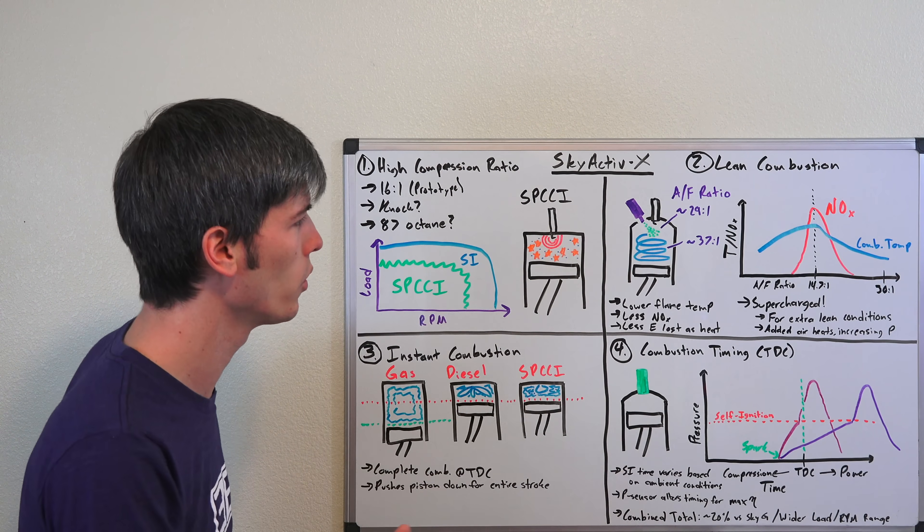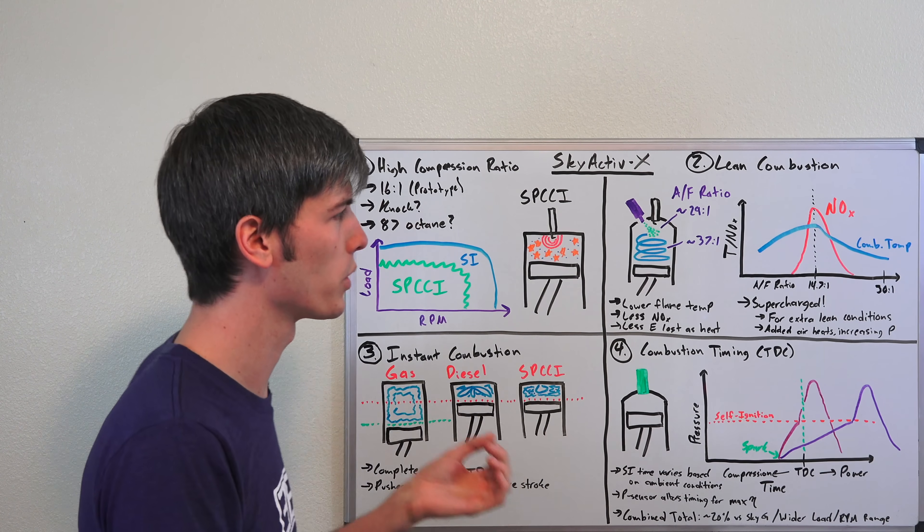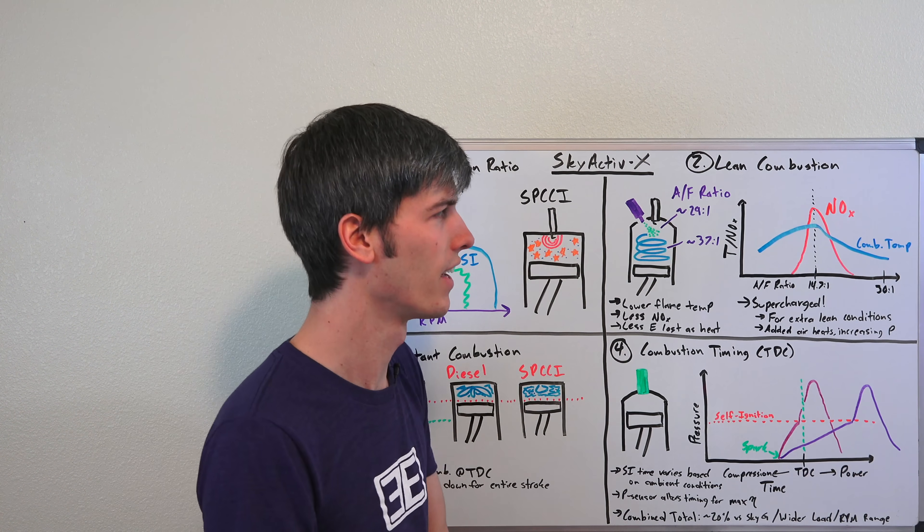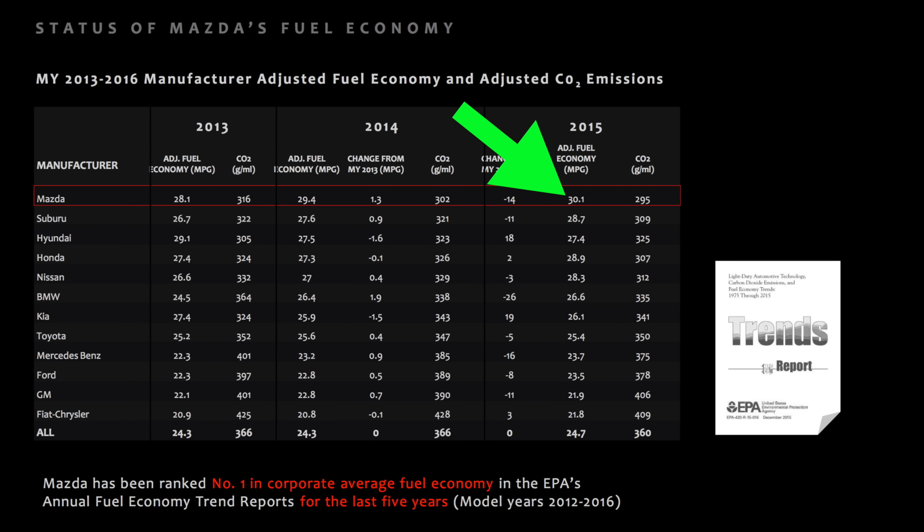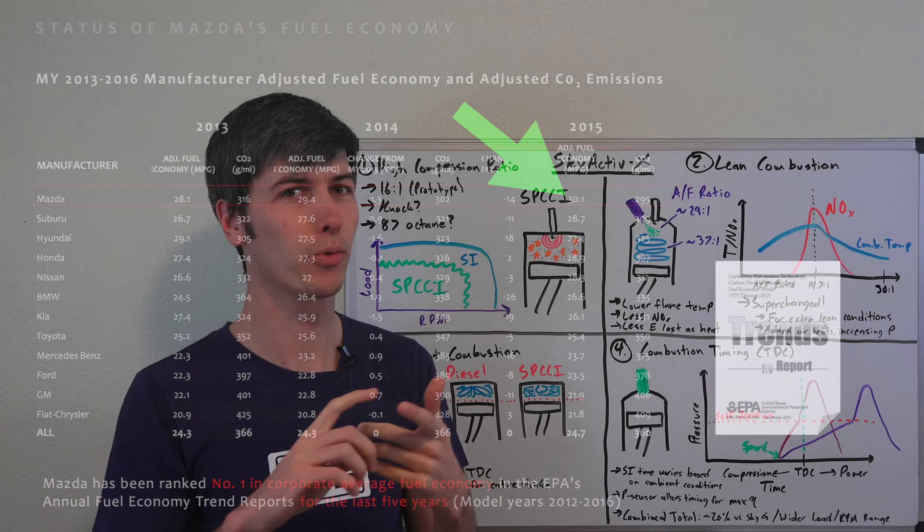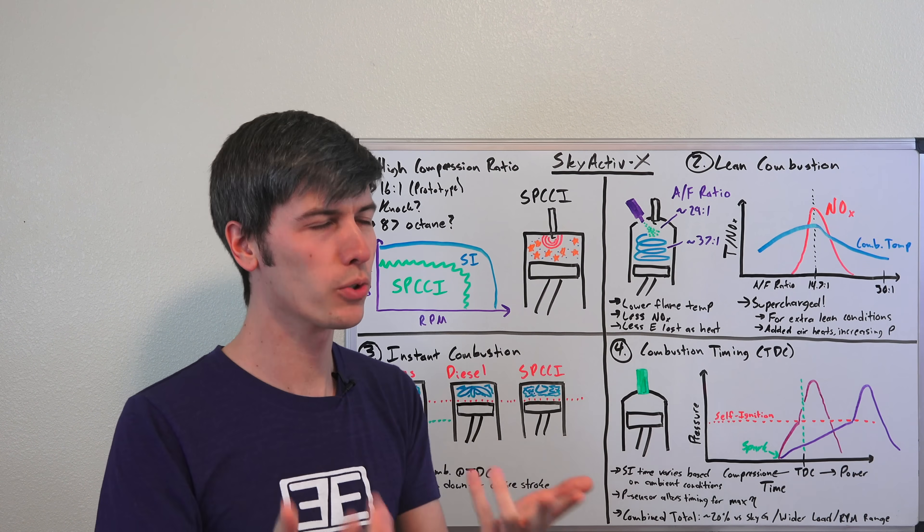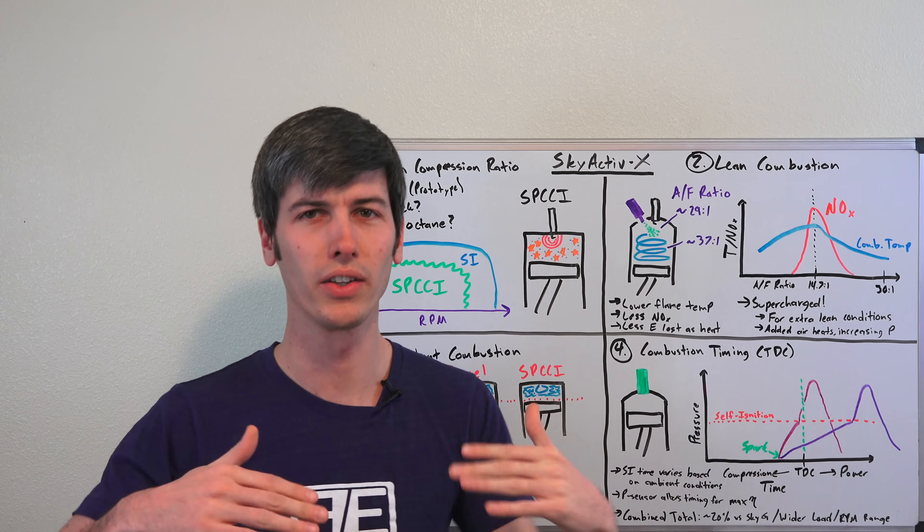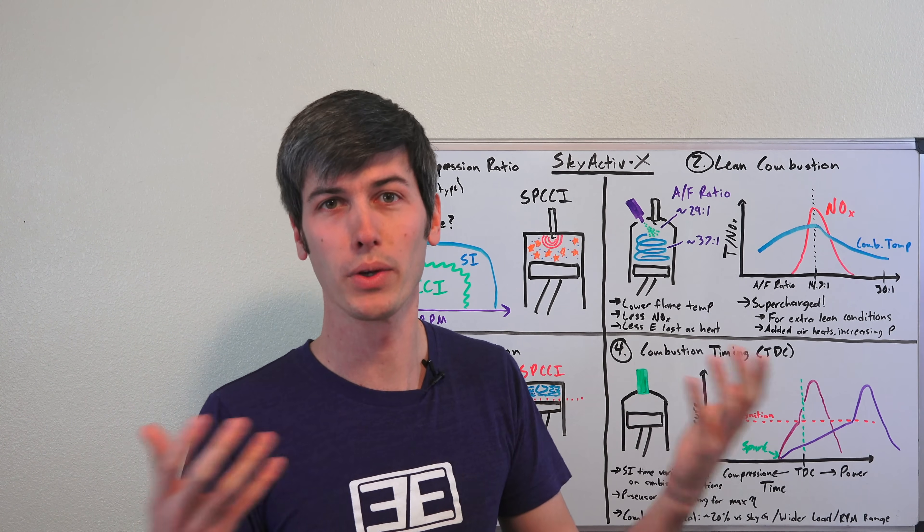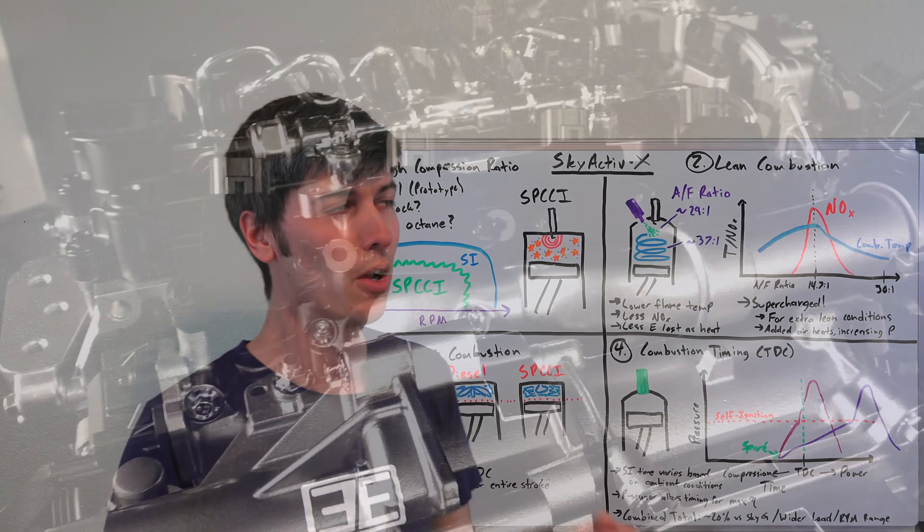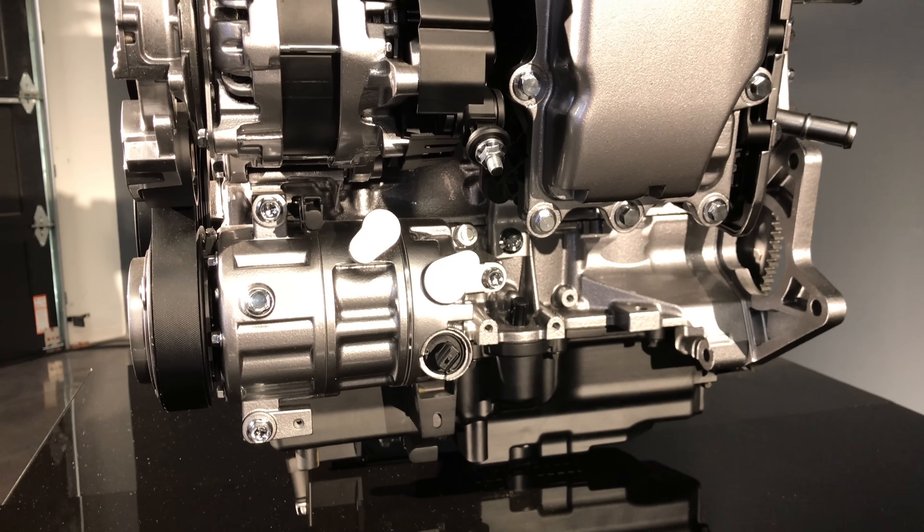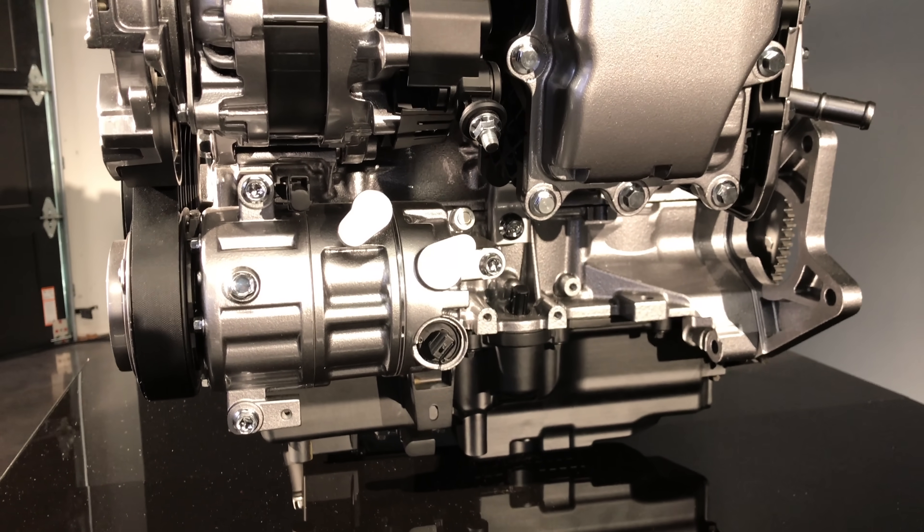That said, there are still improvements which can be made to the internal combustion engine. The proof of Mazda's logic is that for the past five years Mazda has had the EPA's highest corporate average fuel economy rating for all manufacturers, and that's without a single hybrid or electric vehicle. Their approach is logical - they're improving something, making it better, and overall reducing CO2 emissions better than pretty much everybody else without hybridizing or electrifying their cars.